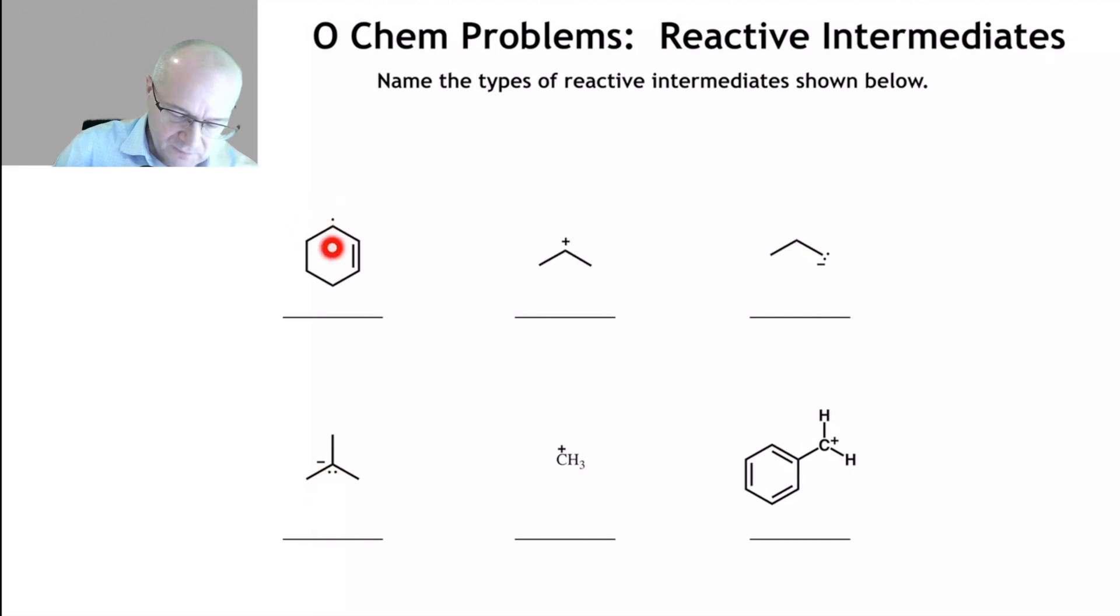This one has a single electron on a carbon, so this is a free radical. However, the free radical is adjacent to a double bond, to an alkene. So this is an allylic free radical.